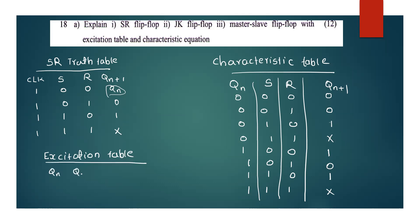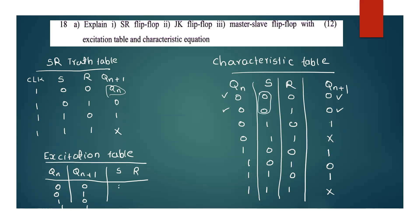Now for the excitation table, we have Qn and Qn+1 with 4 combinations: 0,0 — 0,1 — 1,0 — 1,1. For Qn=0, Qn+1=0: S=0, R=0. For Qn=0, Qn+1=1: S=1, R=0. For Qn=1, Qn+1=0: press R=1, S=0.